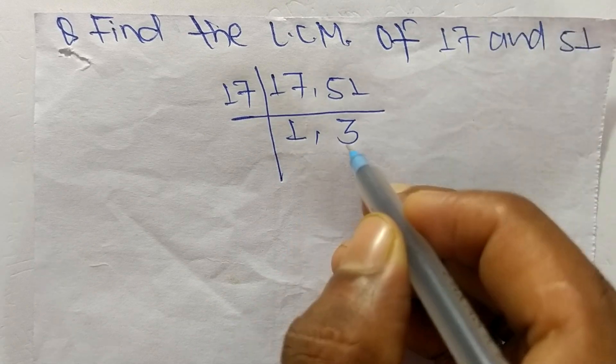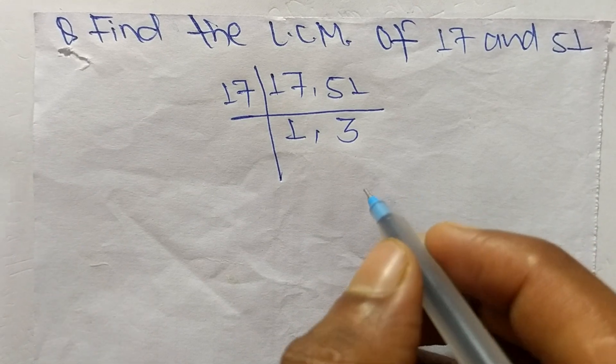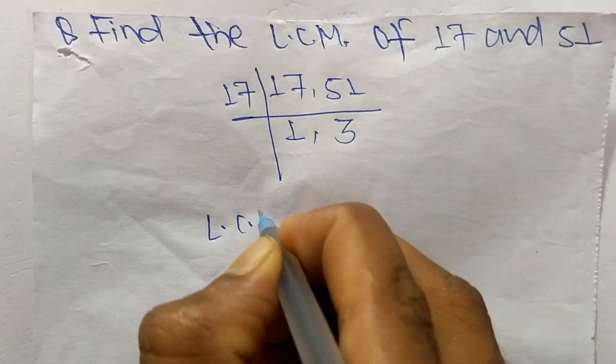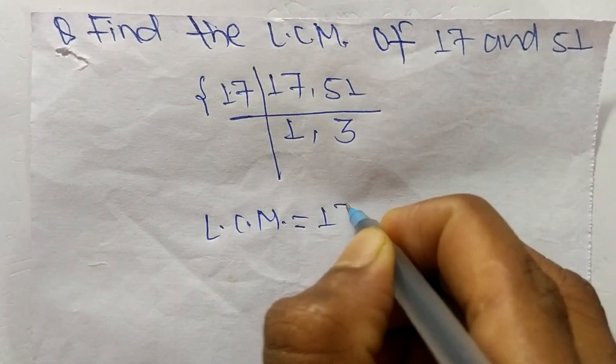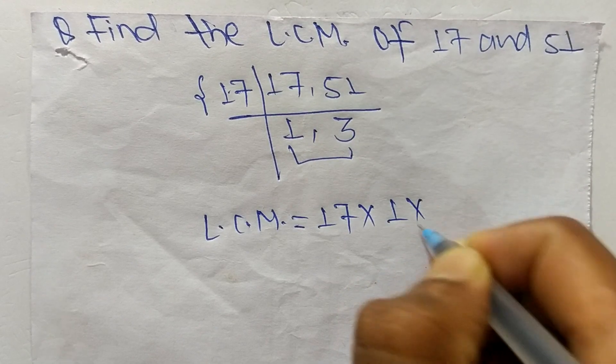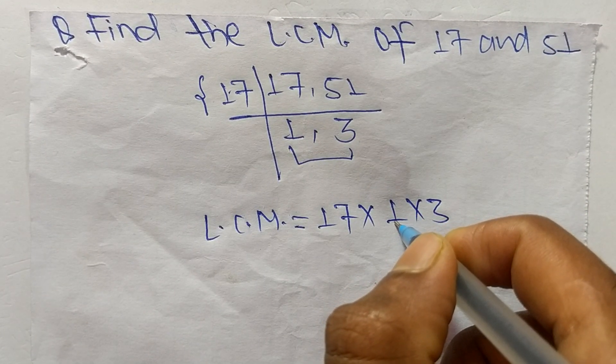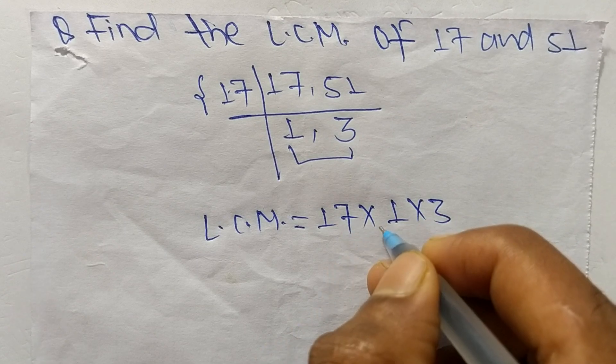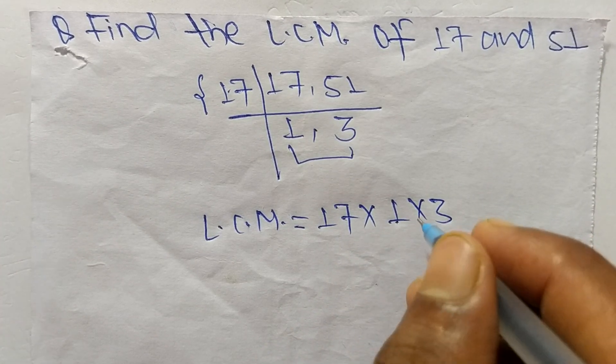So the LCM is equal to, from this part it is 17, and from this part it is 1 times 3. And we neglect 1 also because by multiplying any number with 1 we get the same result. So if you don't write 1, it's also okay.